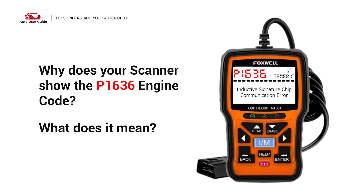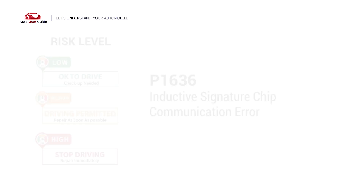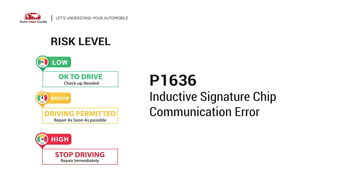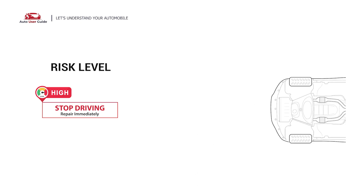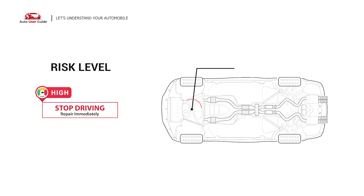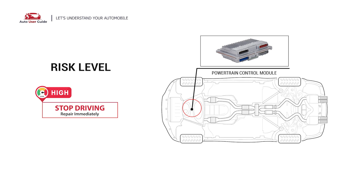Why does your scanner show the P1636 engine code? What does it mean? P1636 is a diagnostic trouble code for inductive signature chip communication error. It indicates a communication error between the PCM and the inductive signature chip, often related to the key fob or ignition system.